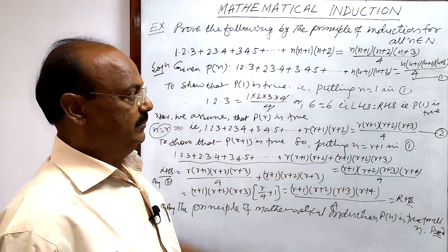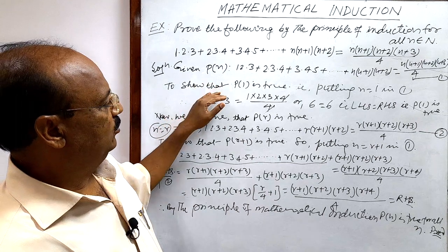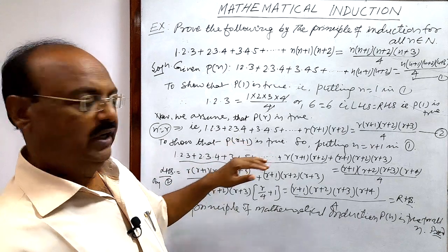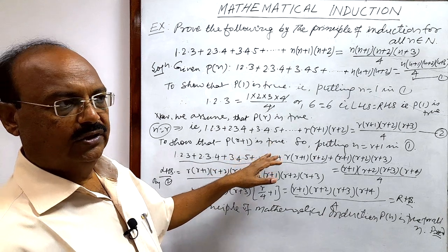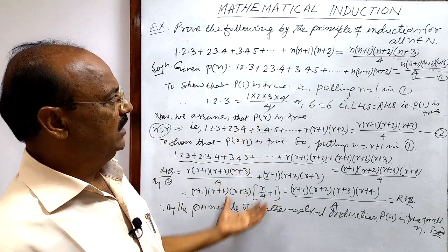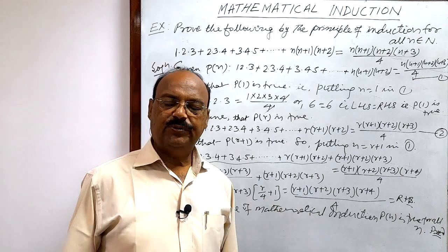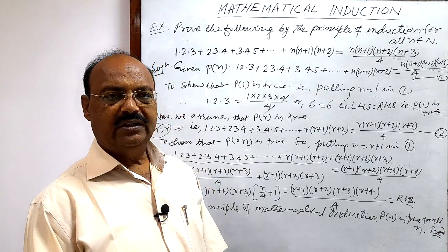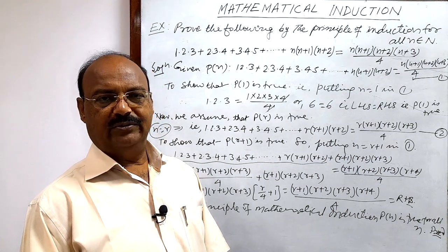This statement has been proved. The three steps are: first, show P(1) is true; second, assume P(R) is true; and third, show P(R+1) is true. These three steps apply to all questions from this topic. I hope you found the solution clear and easy to understand. Thank you very much, and we will see more problems in the videos to come.